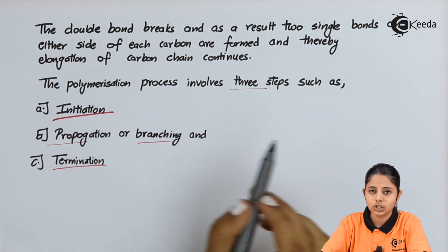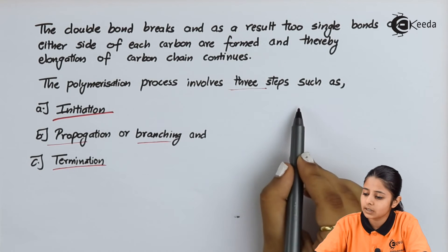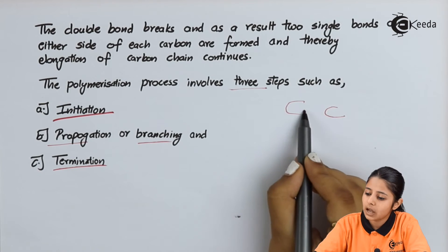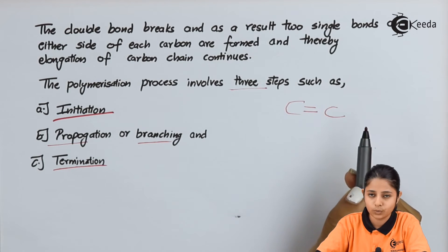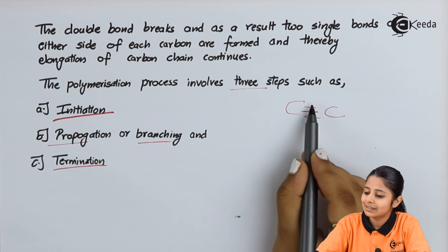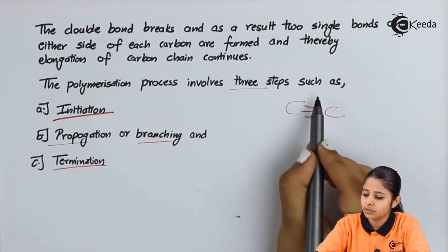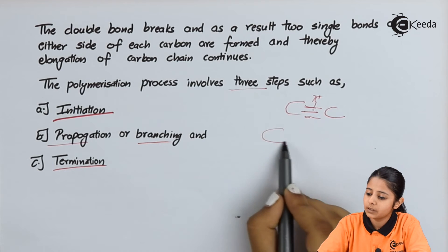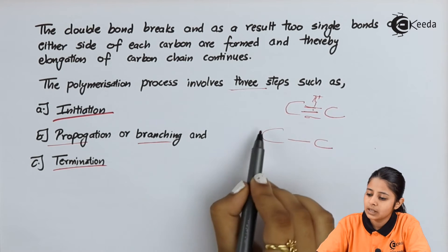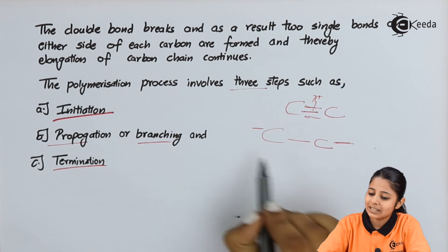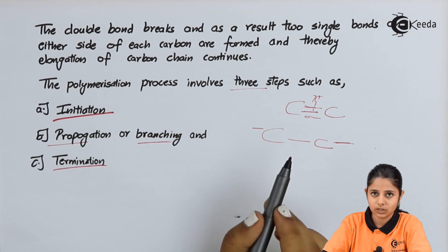In the initiation step, consider two carbons bonded by two bonds: the sigma bond, which is the strong bond, and the pi bond, which is the weak bond. This pi bond gets broken. Once the pi bond breaks, we have C single bond C, and each carbon will have a free bond — this step is the initiation step.